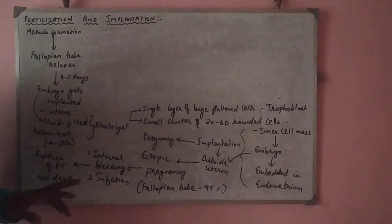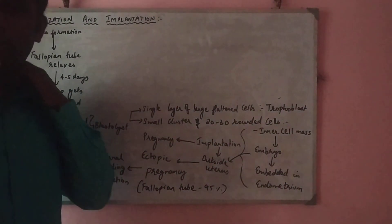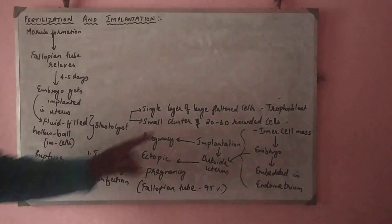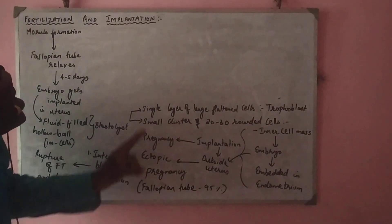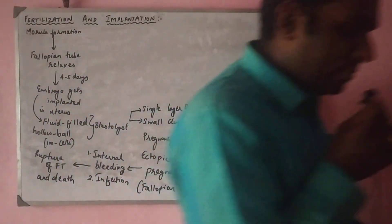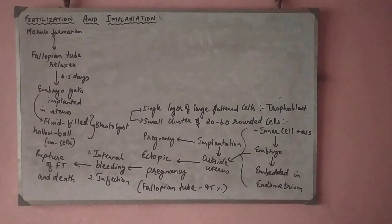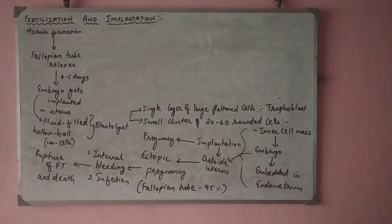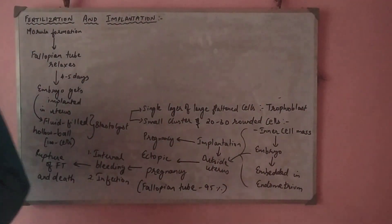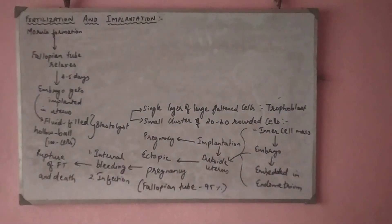This blastocyst consists of two different kinds of cells. One is called the trophoblast, which consists of a single layer of very large and flattened cells. It also consists of some small cells found beneath the trophoblast, which are called the inner cell mass.